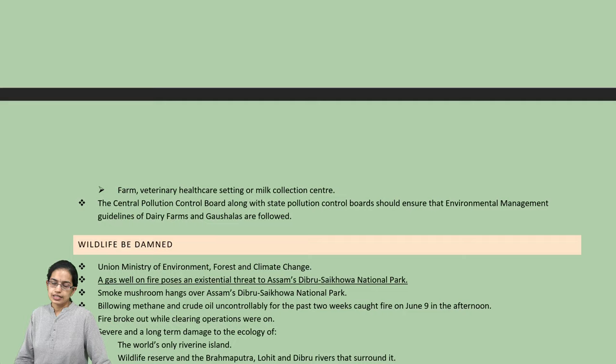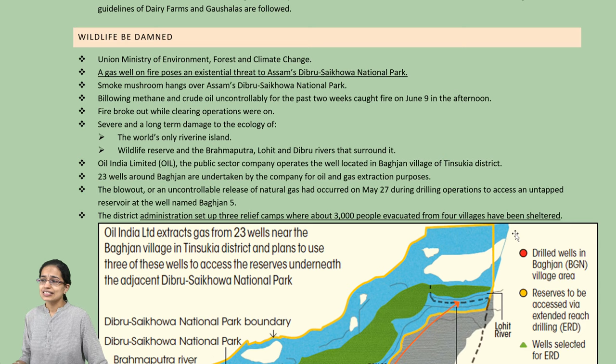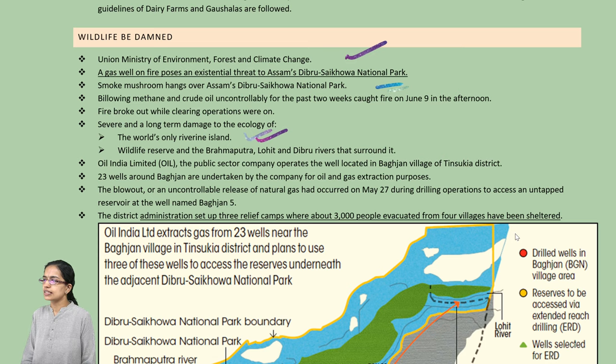The next is the gas leakage that produced a fire in the regions of Assam. The Dibru-Saikhowa National Park is located there, and most of the smoke was seen in this region. This is the world's only riverine island where the fire broke out, and its impacts were felt in the rivers of Brahmaputra, Lohit, and Dibru.